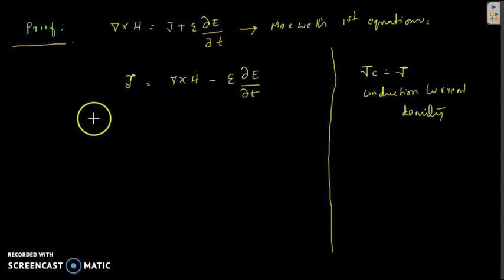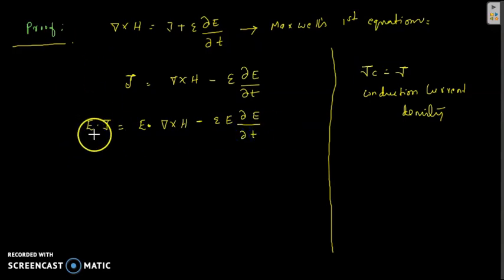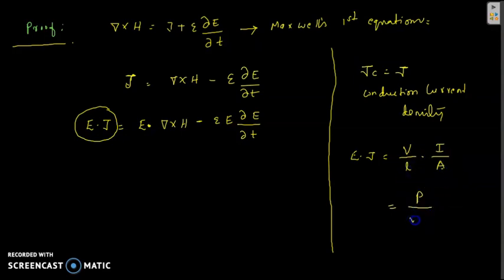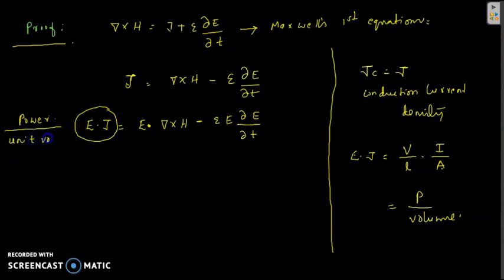We multiply E on both sides. This becomes E dot J. What is E dot J? E can be represented as volts per length, and J is the current density, current per area. So voltage multiplied by current is power, divided by area times length. Hence, E dot J is power per unit volume.